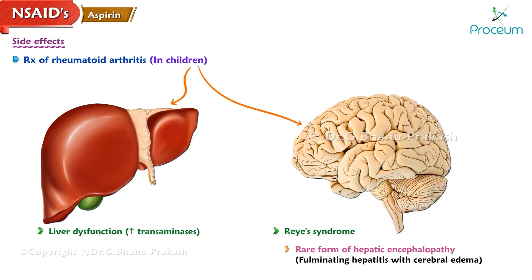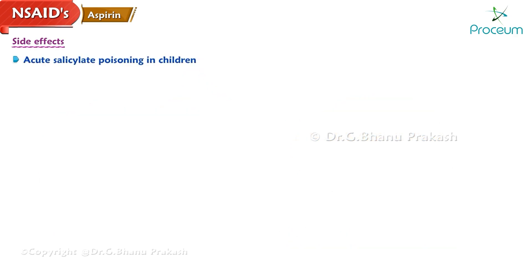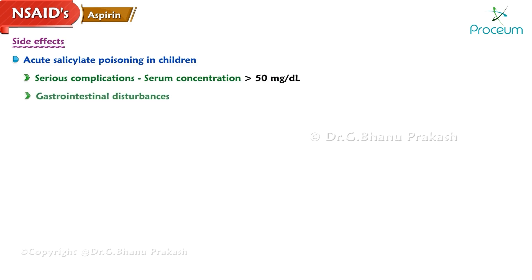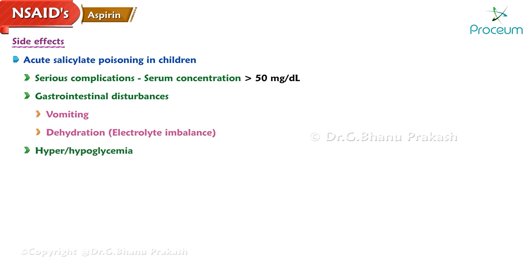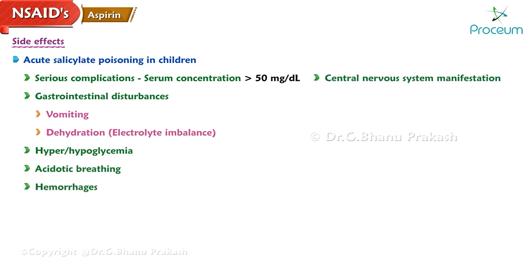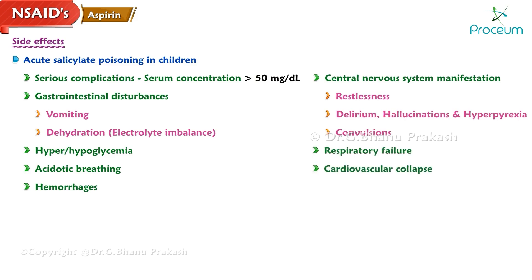Reye's syndrome, a rare form of hepatic encephalopathy, and fulminating hepatitis with cerebral edema can also occur. Acute salicylate poisoning is known to occur in children. Serious complications occur when serum concentration is greater than 50 milligrams per deciliter, manifesting as gastrointestinal disturbances, vomiting, dehydration leading to electrolyte imbalance, hyper/hypoglycemia, acidotic breathing, and hemorrhages, with CNS manifestations of restlessness, delirium, hallucinations, hyperpyrexia, convulsions, respiratory failure, and cardiovascular collapse.